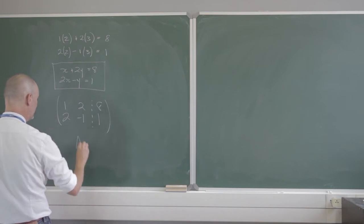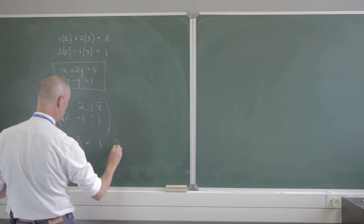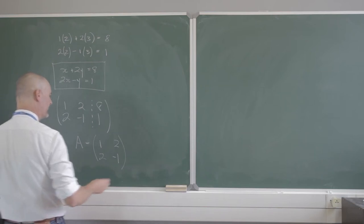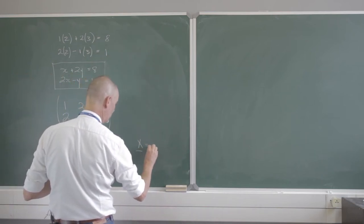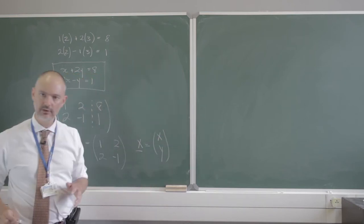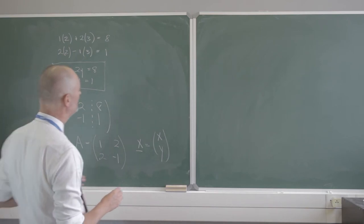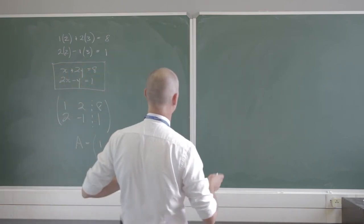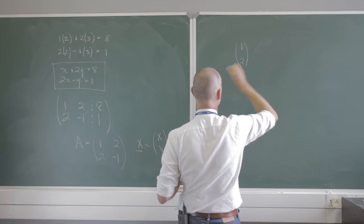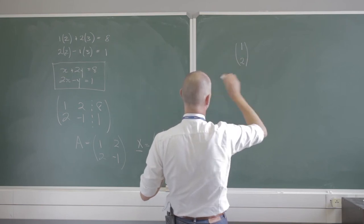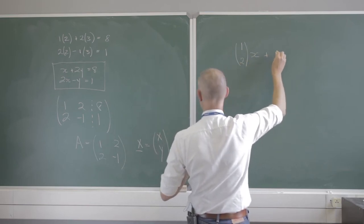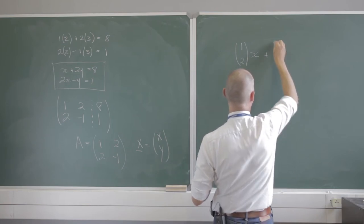Let's write matrix A as just the matrix of coefficients: 1, 2, 2 and negative 1 — a 2 by 2 matrix. I'm going to have a column vector x with x and y in its two rows, one column. Let me write the x's: 1 and 2, multiplied by scalar x. And 2 and negative 1 multiplied by y.